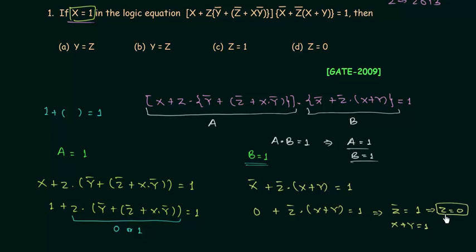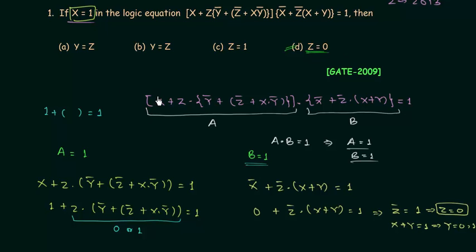Since x is 1, y can be 0 or it can be 1. If you look at the four options, option D is the correct option because z is equal to 0. That's how you deal with this problem.